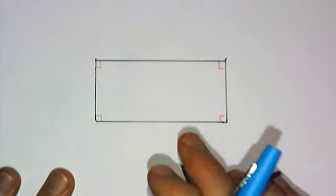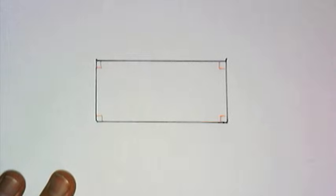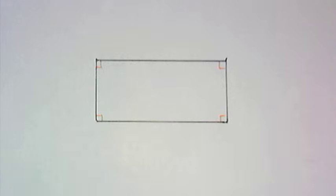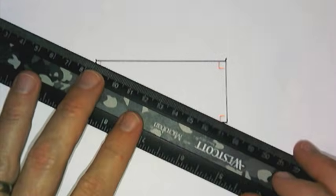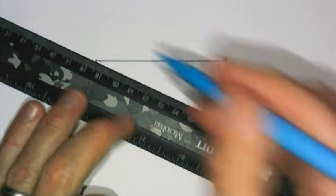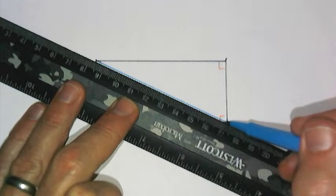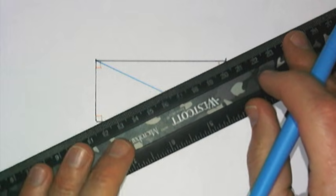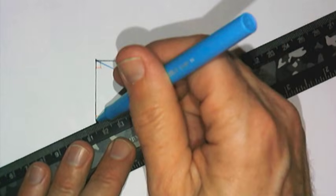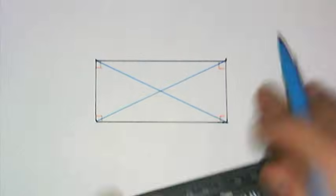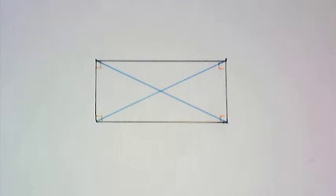Moving on to our next figure, which is a rectangle. If you remember, a rectangle is an equiangular quadrilateral. I am going to add the diagonals for our rectangle. The diagonals of a rectangle must be congruent, but tonight we want to talk about how they intersect each other.